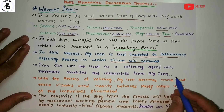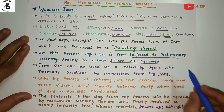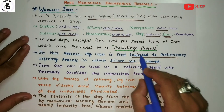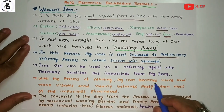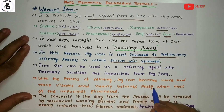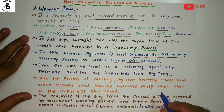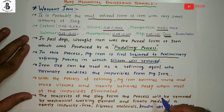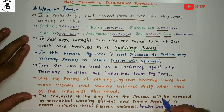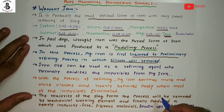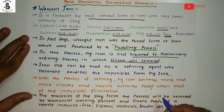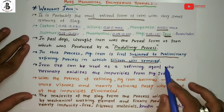Nowadays most industries are not using the puddling process for manufacturing wrought irons. Instead, they are focusing on new methodologies, known as the Aston process (stone wire process). By this process, the pig iron is first melted in a cupola furnace, and then refining of the molten metal is carried out in a Bessemer converter. The Aston process has higher purity compared to the puddling process.